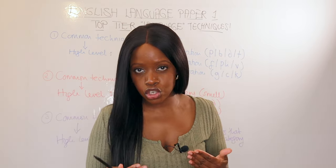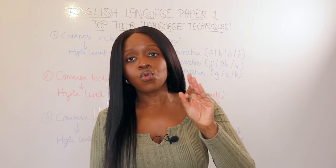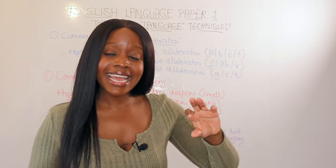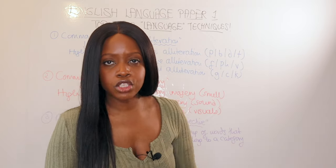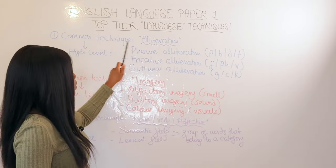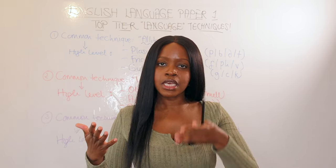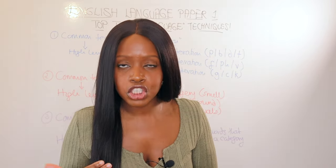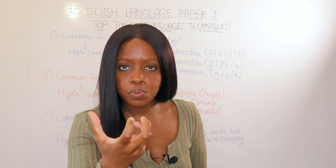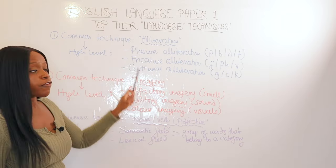For the Language Paper 1 question two exam, you will always be expected to comment on language, and in question four you discuss to what extent you agree with the student statement. Examiners look at how the writer uses language to reinforce your point. The first common technique is alliteration. Alliteration is a great technique to point out, but it's a very basic one — it simply means two or more words starting with the same letter. When you spot alliteration, I'd like to challenge you to be more specific.